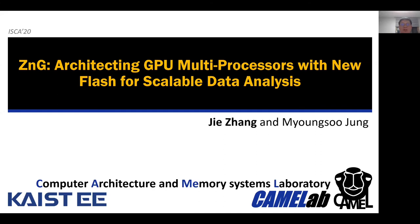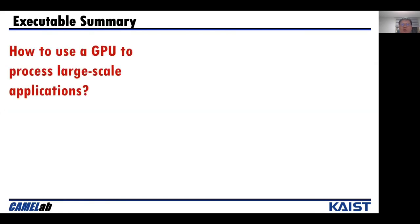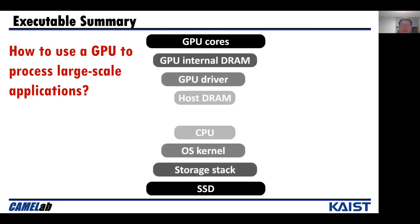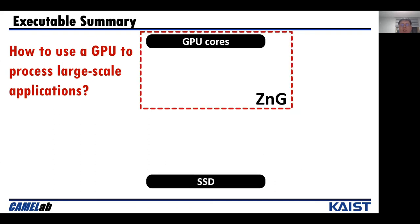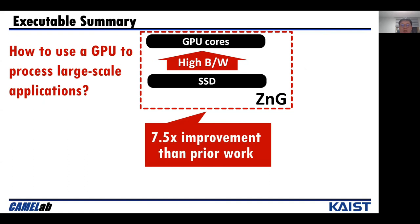Hello everyone, my name is Jie Zhang from Keist. Today I will talk about our work CNG, which is architecting GPU with ZNAND flash for scalable data analysis. This work mainly focuses on the issues of using GPU to process larger scale applications. Traditional computer systems employ GPU and storage as discrete devices. Transferring data from SSD to GPU needs to go through multiple software stacks and hardware boundaries, which become a performance bottleneck. To address this, we propose ZNG. It moves the SSD close to the GPU cores and can deliver high SSD bandwidth. Our evaluation results show that ZNG can improve performance by 7.5 times compared to prior work.